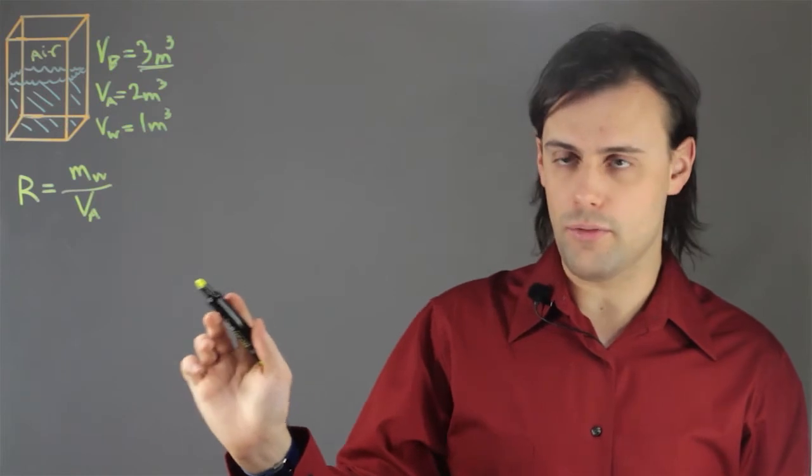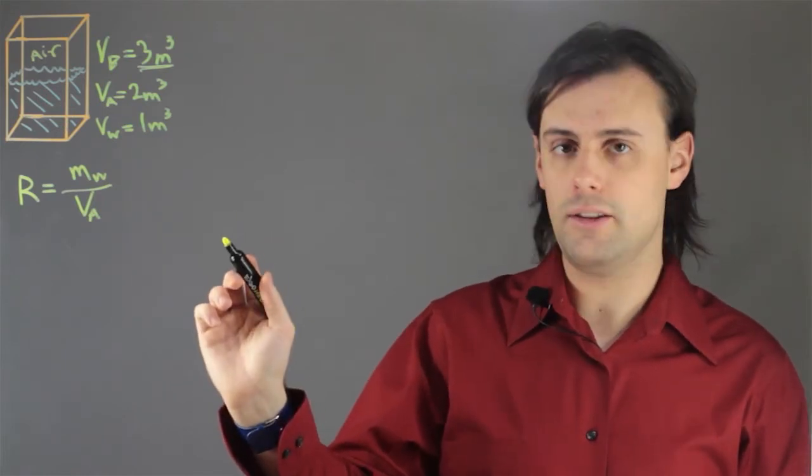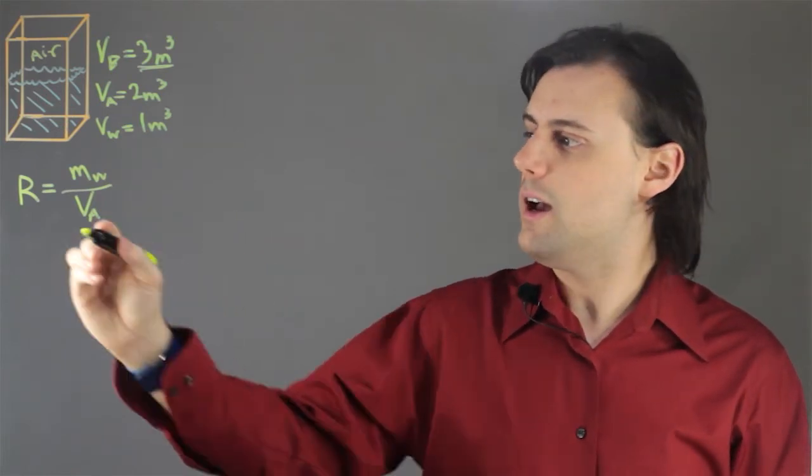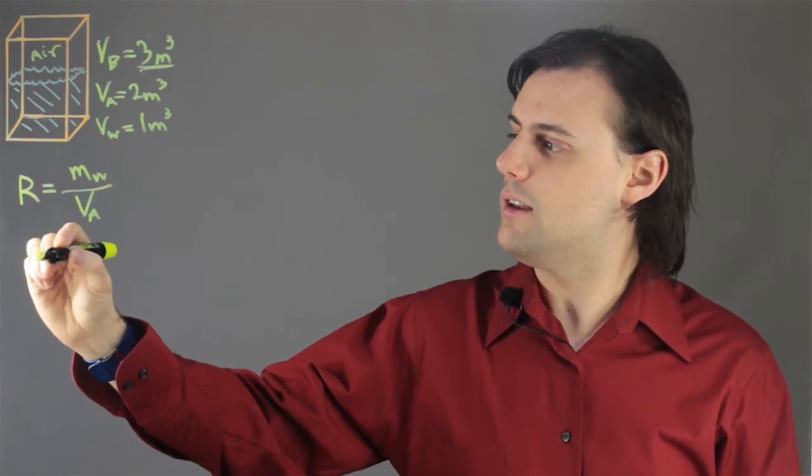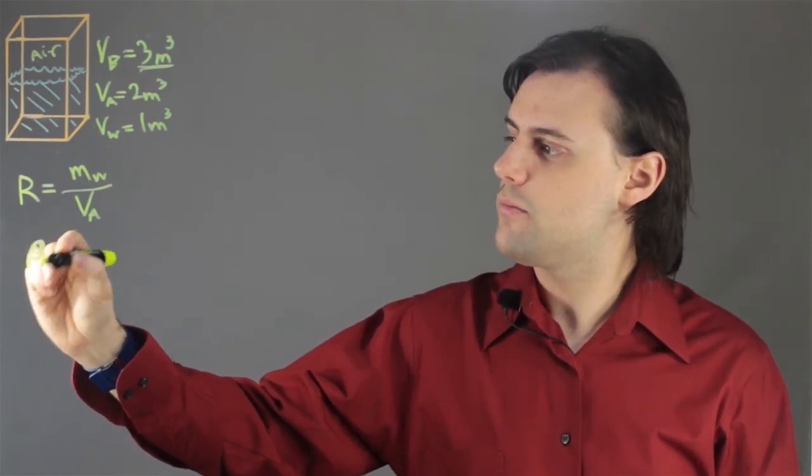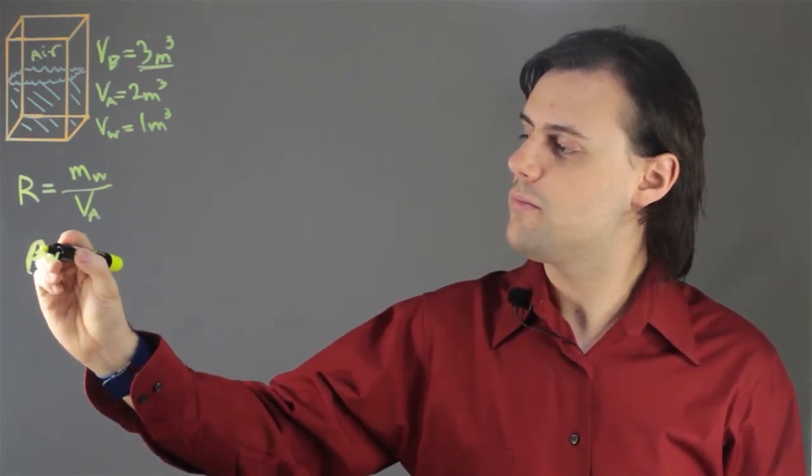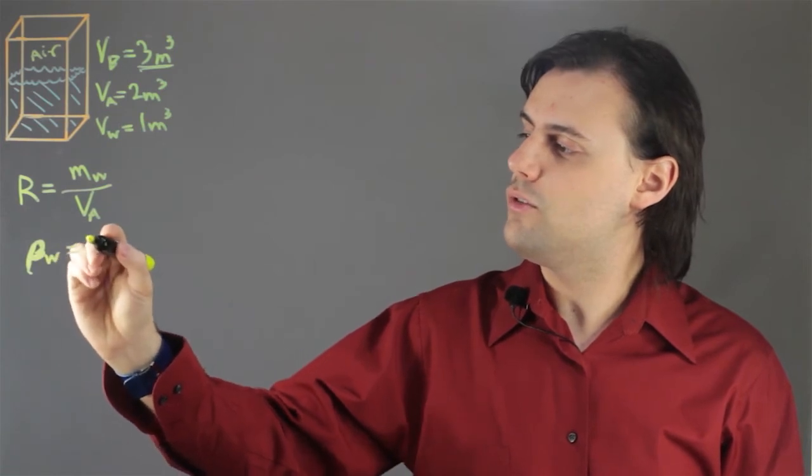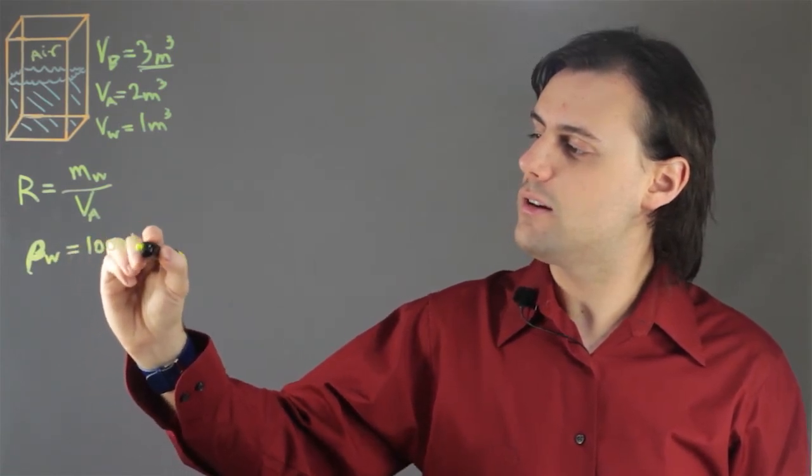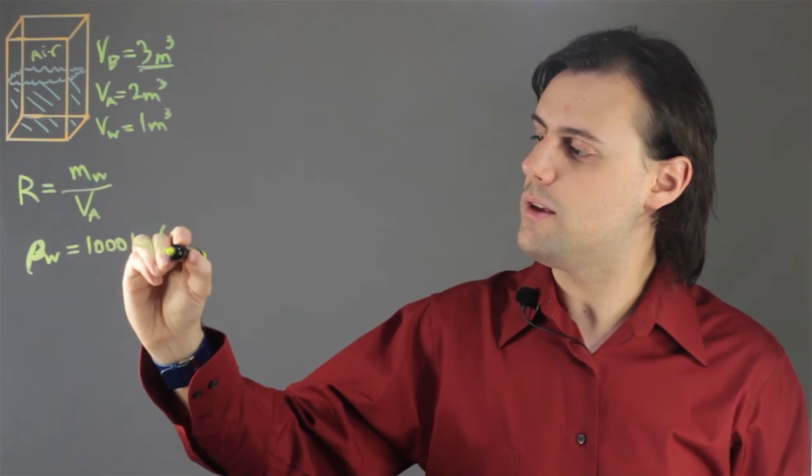In order to determine the mass of the water, we need to know the density of the water. And water has a density, rho sub w, that is equal to 1,000 kilograms per meters cubed.